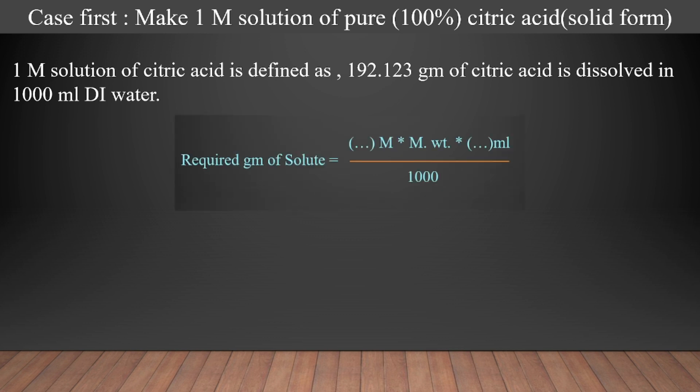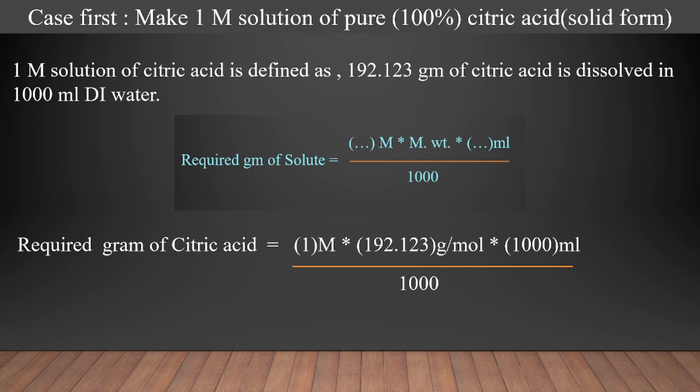This is the formula by which you can calculate how much solute is required for making different molarity solutions. The formula is: Required grams of solute = Required molarity × Molecular weight × Required volume in ml ÷ 1000. Hence, the required grams of citric acid = 1 × 192.123 g/mol × 1000 ÷ 1000 = 192.123 grams.